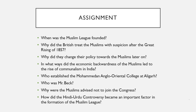For your assignments, answer the following questions: When was the Muslim League founded? Why did the British treat the Muslims with suspicion after the Great Rising of 1857, and why did they change their policy later? In what ways did the economic backwardness of the Muslims lead to the rise of communalism? Who established the Mohammedan Anglo-Oriental College at Aligarh? Who was Mr. Beck and why were the Muslims advised not to join the Congress? How did the Hindi-Urdu controversy become an important factor in the formation of the Muslim League? In the next class we will continue with this chapter. Have a nice day.